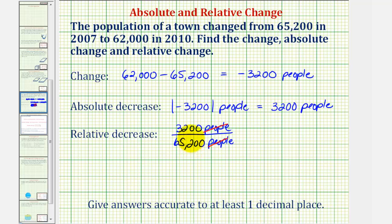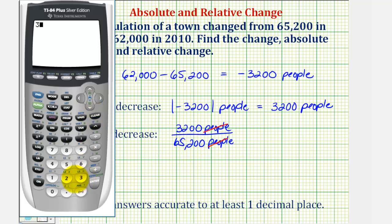Which means we'll divide, multiply by 100, and add a percent sign. So we have 3,200 divided by 65,200 equals... Now we'll convert to a percent and round to at least one decimal place.